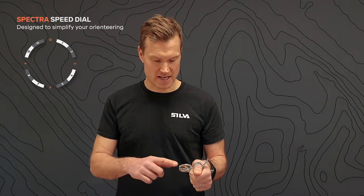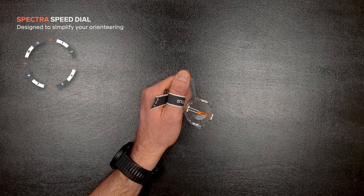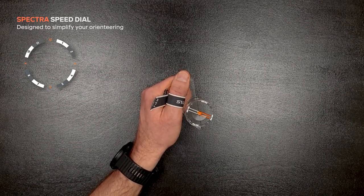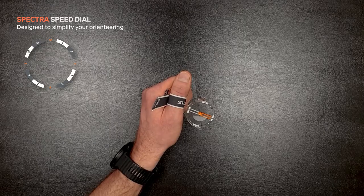The Spectra speed dial graphics, found on the capsule of the S models, consist of reference marks and numbers designed to simplify your orienteering. Designed like a clock, the speed dial is easy to read and memorize.